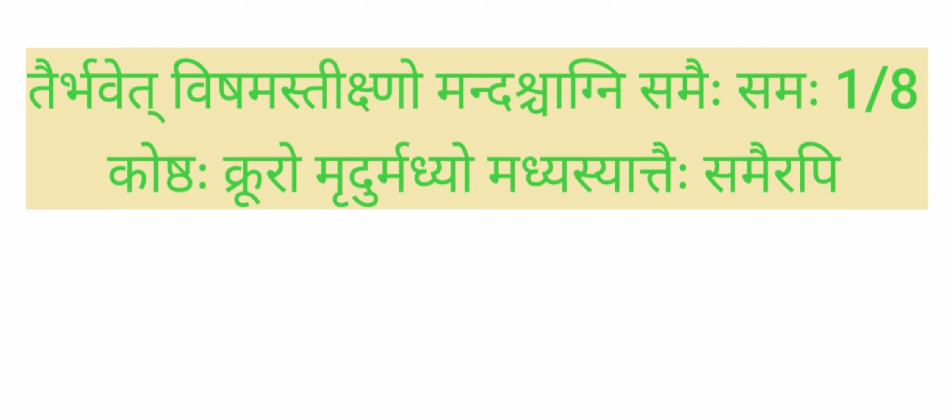Agni and Koshta are the two important topics in Ayurveda Tantra. Agni denotes the digestive capacity and Koshta denotes the eliminative capacity. Both are classified based on three doshas. Agni means Jadara Agni or Pajagapitta itself. Based on the dosha dominance, the character of Agni or the digestive power will change — this is purely based on Pajagapitta. Agni can be classified into four basically.